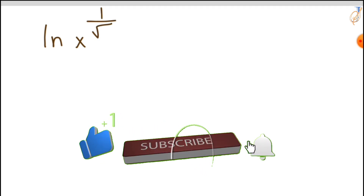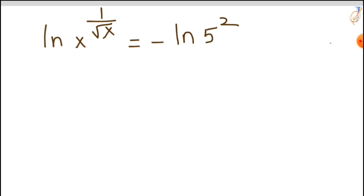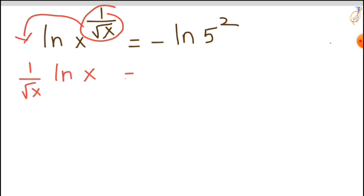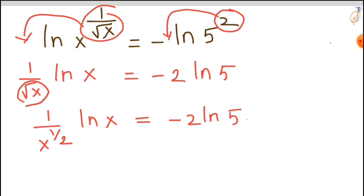We can write 25 as 5 squared. Now we have natural log of x raised to the power of 1 upon square root of x equal to minus natural log of 5 squared. Both sides are in the form of log of a to the power m, so we can write this as m times log a — whatever is in the power comes to the front. So: 1 upon square root of x times natural log of x equals minus 2 times natural log of 5. The square root of x can be written as x to the power 1/2, giving us 1 upon x^(1/2) times natural log of x equals minus 2 natural log of 5.